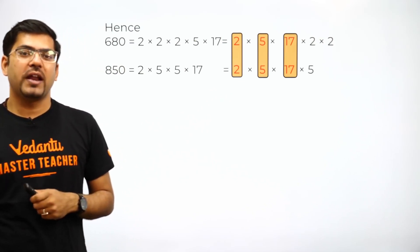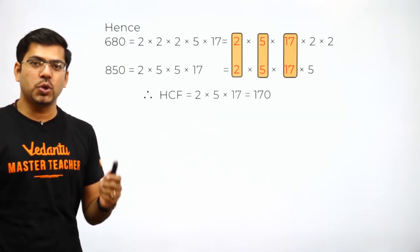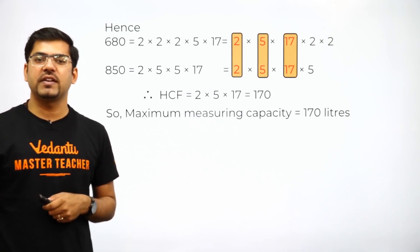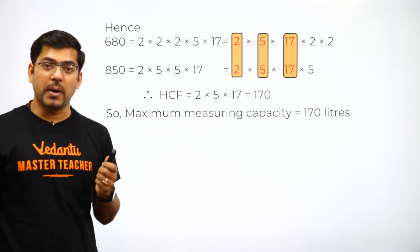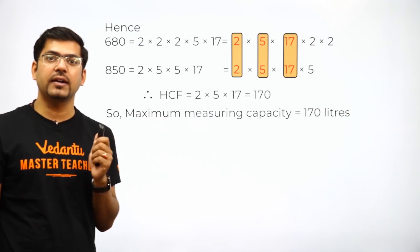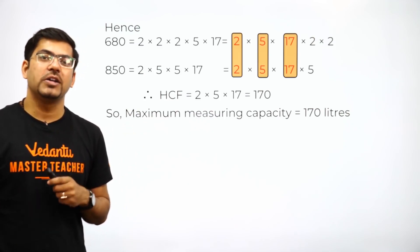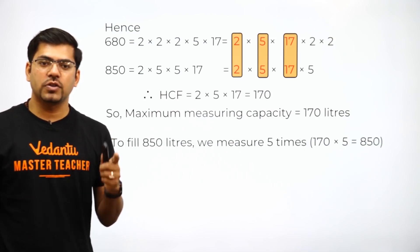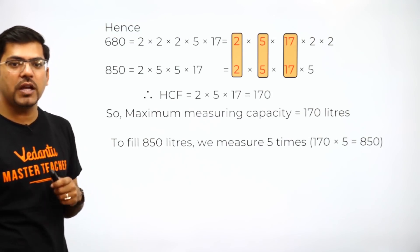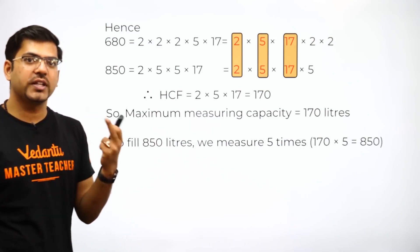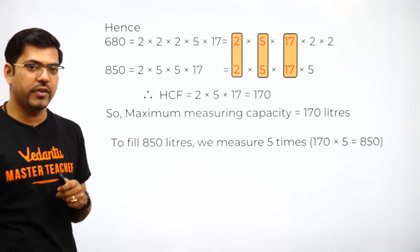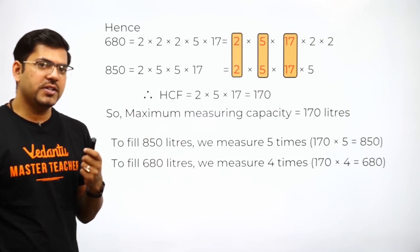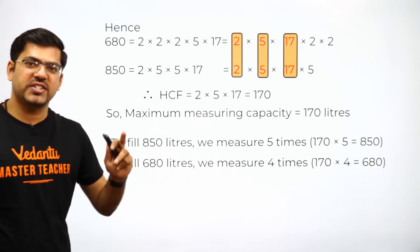So the HCF is 2 × 5 × 17 — all common terms taken once — giving us 170. Hence, the maximum measuring capacity is a 170-liter mug. Using that 170-liter mug, for the first tank of 850 liters we measure it in 5 times (170 × 5 = 850), and for the second tank of 680 liters we measure it in 4 times (170 × 4 = 680).